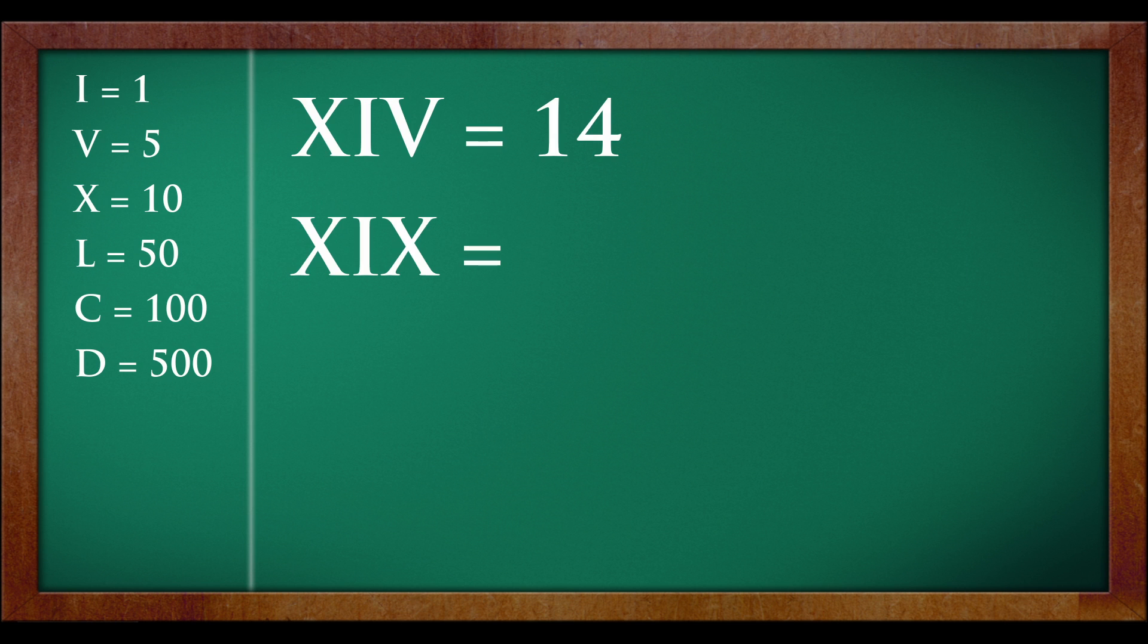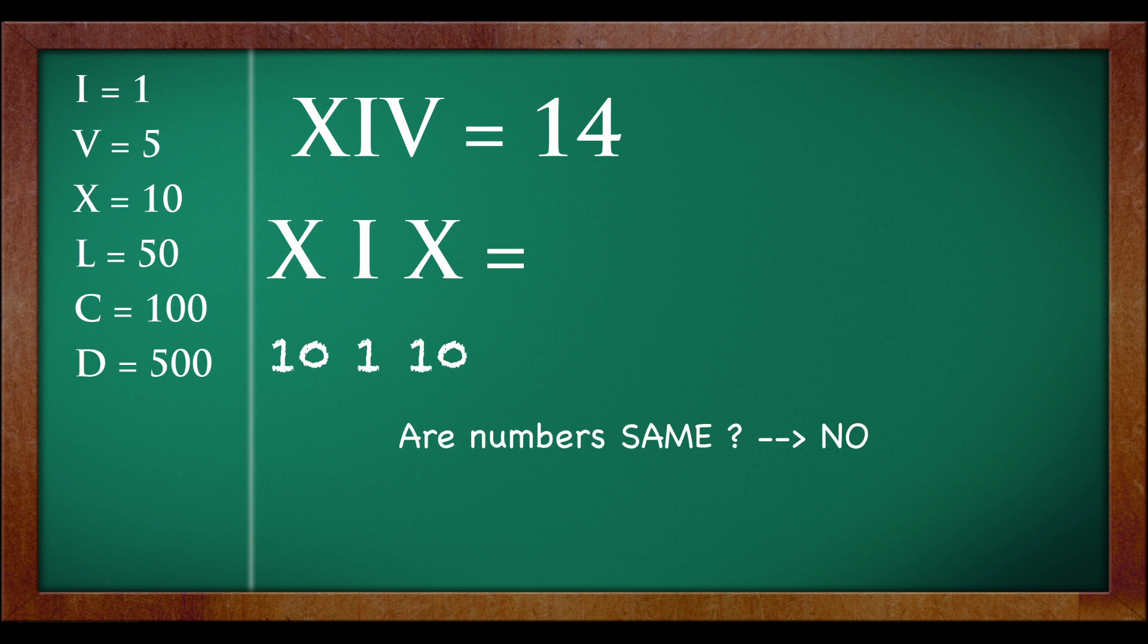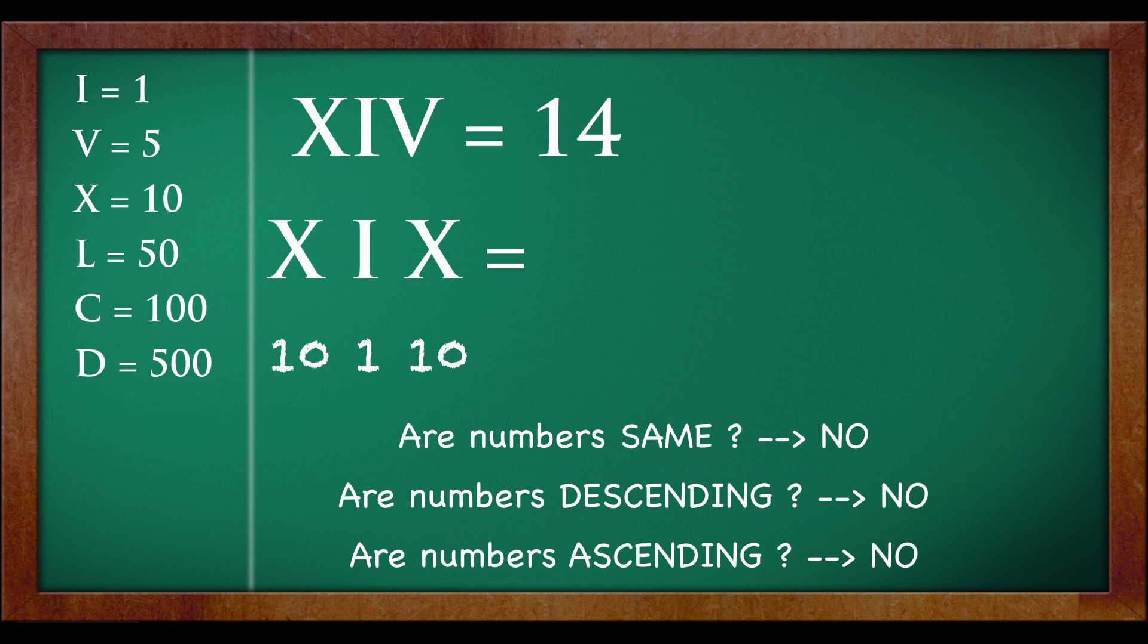Let's jump to 19. 19 is XIX. So, first write the numbers below: 10, 1 and 10. Is this same? No. Is this descending? No. Is this ascending? No.